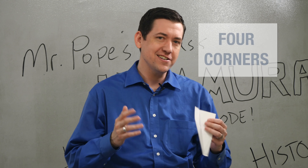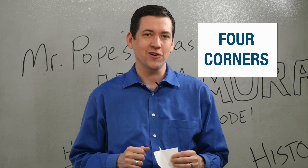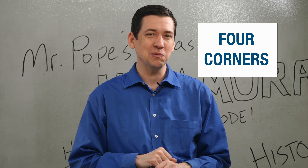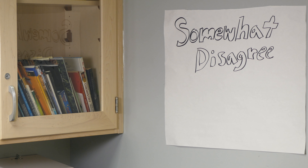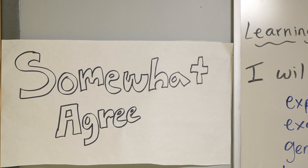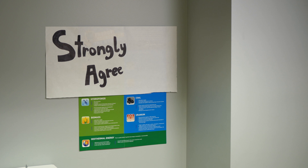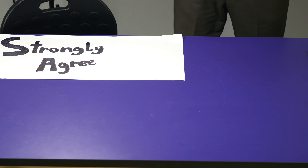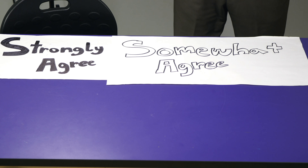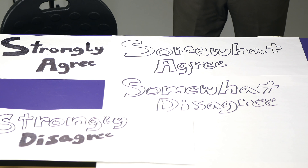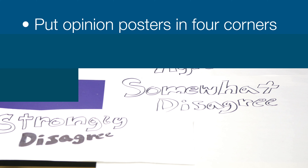This active engagement strategy is called four corners and it doesn't require a lot of hardware. All you need is four pieces of poster paper. Place them on or near the corners of your room and they should read: strongly agree, somewhat agree, somewhat disagree, and strongly disagree.